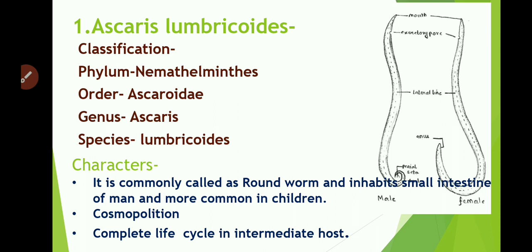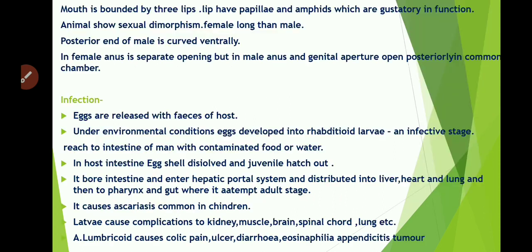General characters of Ascaris lumbricoides: it is commonly called the roundworm and inhabits the small intestine of man, more common in children. It is cosmopolitan in distribution. The mouth of Ascaris is bounded by three lips: one dorsal lip and two ventrolateral lips. The lips have papillae and amphids which are sensory in function. The animal shows sexual dimorphism; the female is longer than the male. In the female, the anus is a separate opening, but in the male, the anus and genital aperture open posteriorly into a common chamber. The posterior end of the male is curved ventrally.